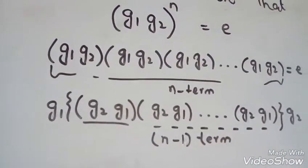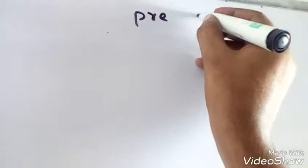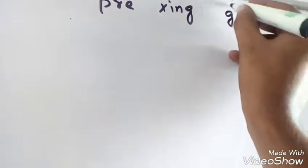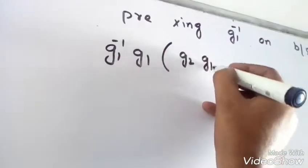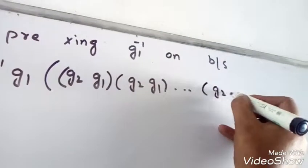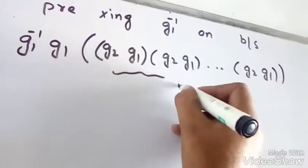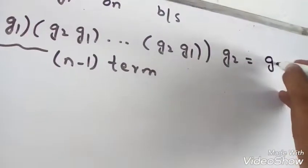Now from here, taking out G1, we use the associative property, because in a group the associative property is satisfied. So we get G1·(G2·G1·G2·G1·...·G2)·G1 equal to identity, which has N minus 1 terms. Now pre-multiply G1 inverse on both sides.